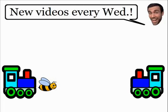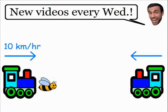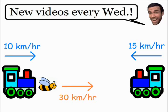Welcome to the solution of the Buzzkill Brain Teaser. In this problem we have two trains moving towards each other. One train travels at a constant speed of 10 kilometers per hour, and the other train is traveling at a constant speed of 15 kilometers per hour. In between these two trains is a bumblebee, and the bumblebee travels at a constant speed of 30 kilometers per hour.